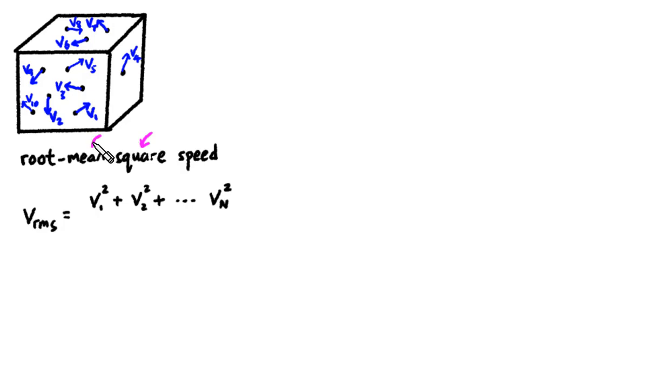The next step is to mean it, meaning to average it. So if there are n gas particles, to calculate the average, we divide by n. And the last step is to root it, meaning we square root the result. So this is how you calculate the RMS speed or the root mean square speed.